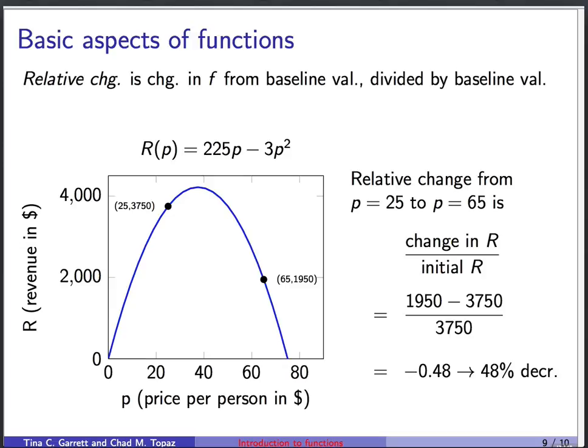Finally, we can talk about the relative change. And the relative change between two points on a function is just the change in that function from its baseline value, whatever we choose to be the baseline, divided by the baseline value. So let's take this point here, and we're going to think of this as being our baseline. And we're going to ask what happens as we increase the price from 25 to 65. And so the relative change between those two points is defined as the change in R divided by the initial value of R. So the change in R is just 1950 minus 3750. And then the initial value was up here at 3750. So if we do 1950 minus 3750 over 3750, we get minus 0.48. Or in terms of percentages, that's a 48 percent decrease. Or the relative change in the function between this point and this point is minus 48 percent.